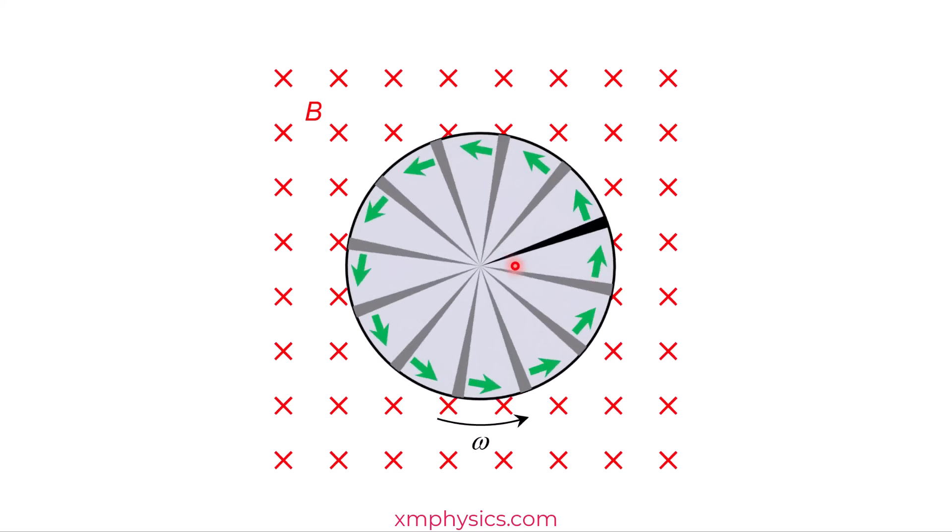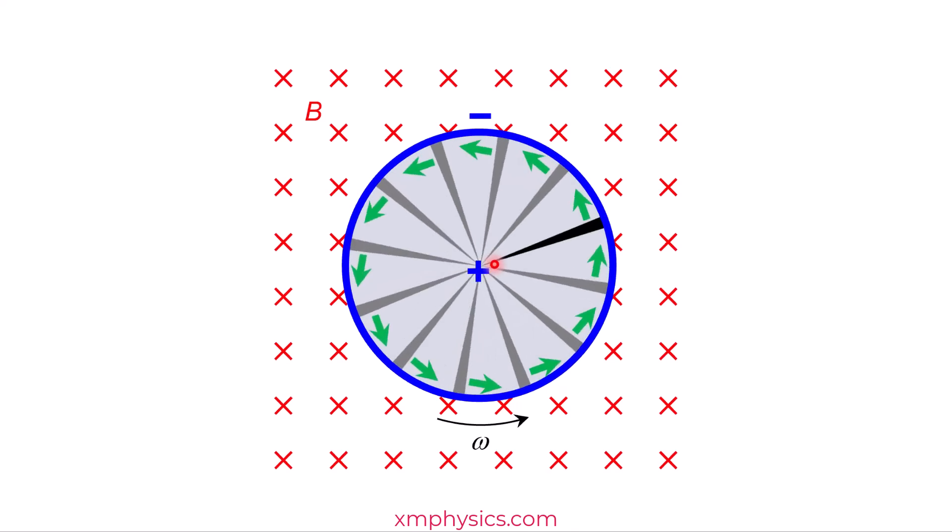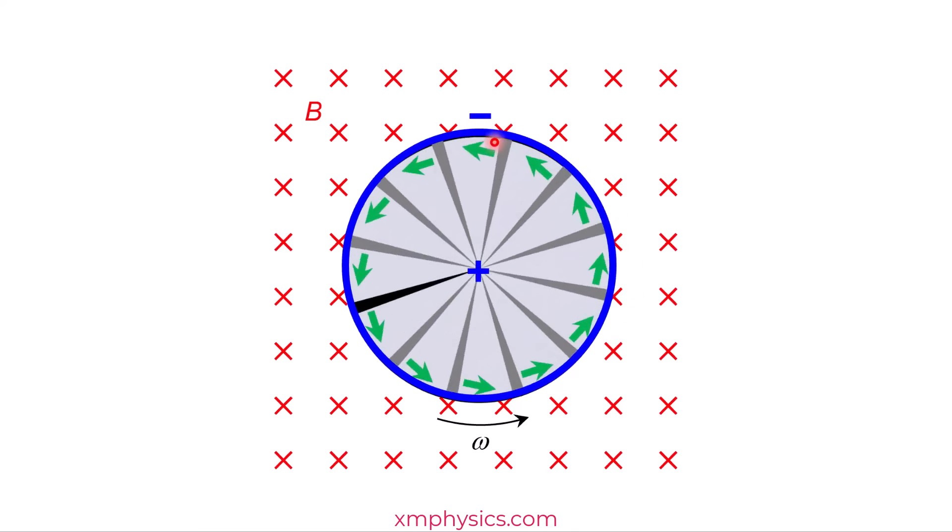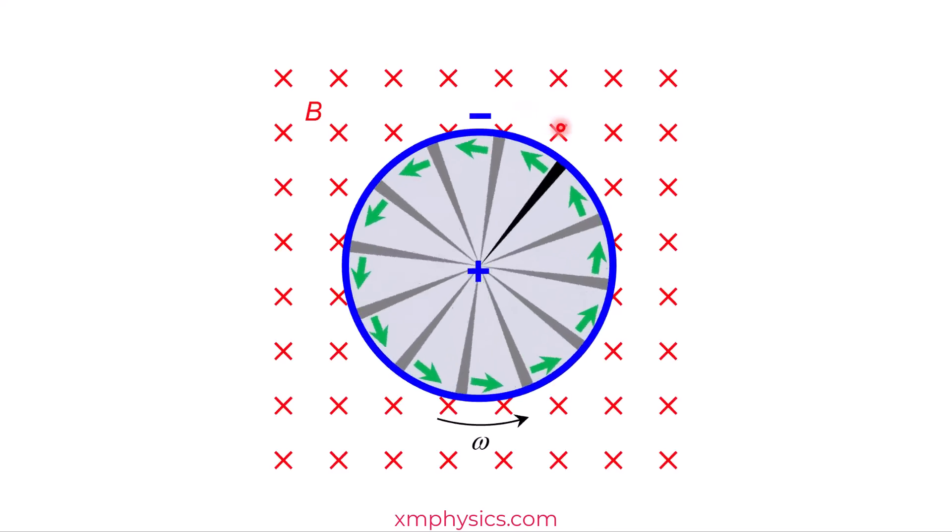And as a result, we're going to have an induced EMF. The positive terminal will be at the center of the disc, and the entire circumference, the rim of the spinning disc, will be the negative terminal. Can you see why?